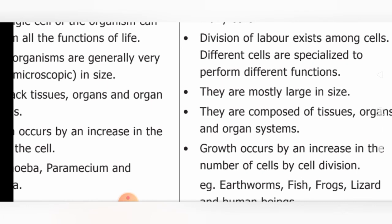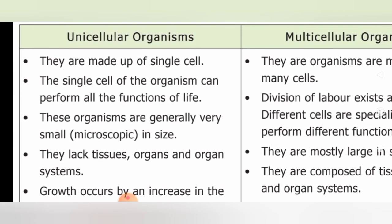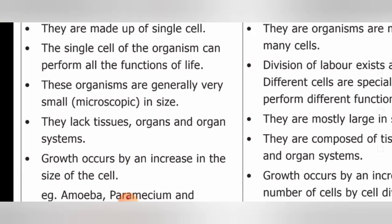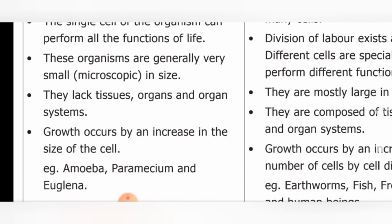Examples for multicellular organisms are earthworms, fish, frogs, lizards, and human beings — even humans are the best example for multicellular organisms. This is the important difference between unicellular and multicellular organisms. We have now discussed in detail about unicellular and multicellular organisms.